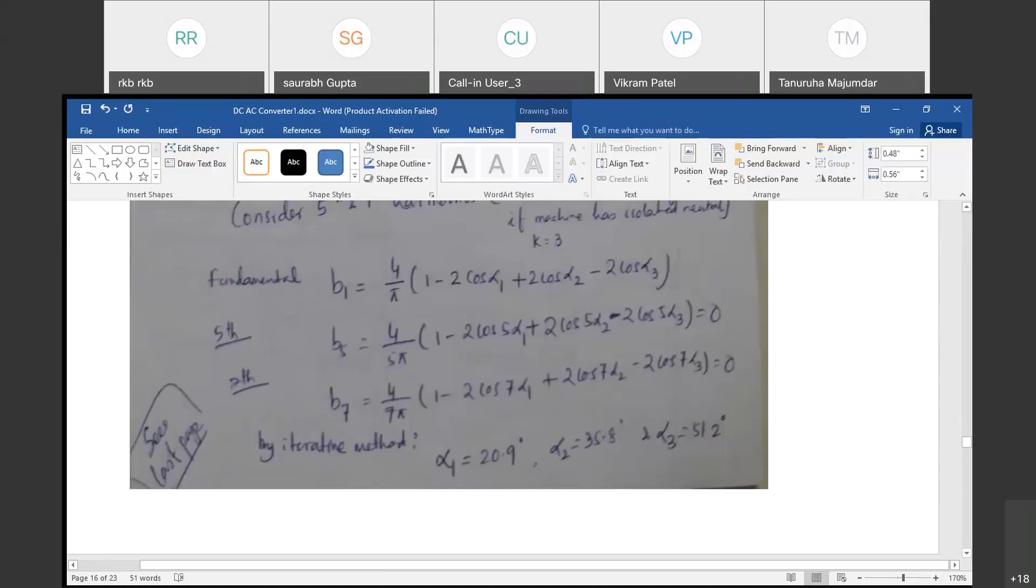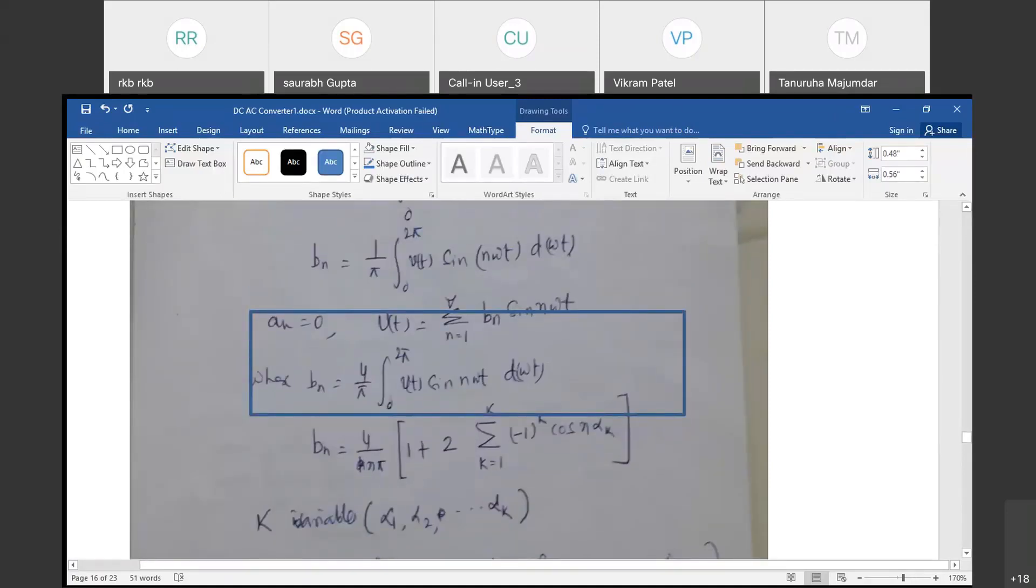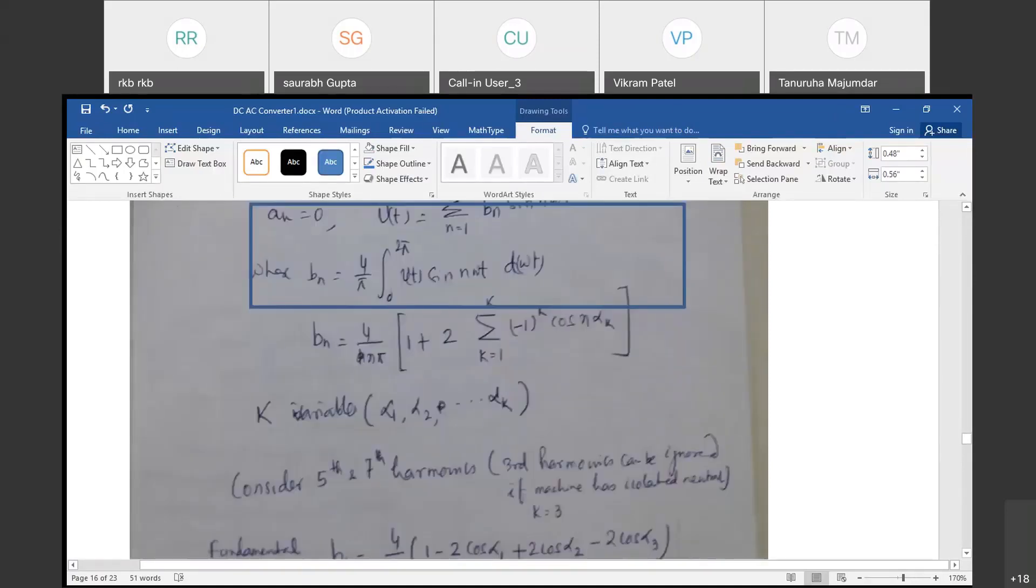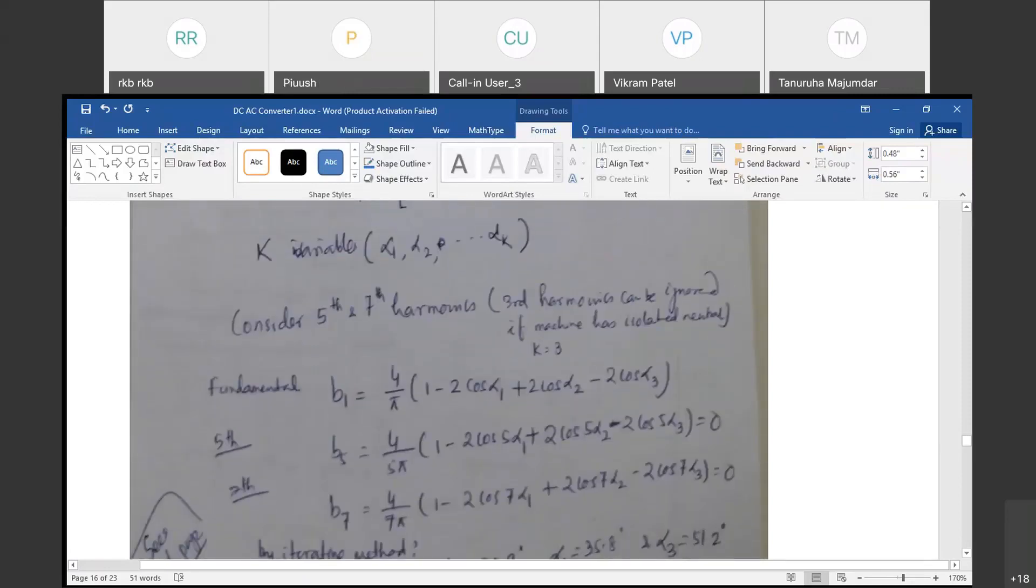These are the iterative methods. Otherwise, also you can solve by using these two equations, three variables, by guessing some values, α1, α2, α3. You can also. Minimum three equations you can derive from.